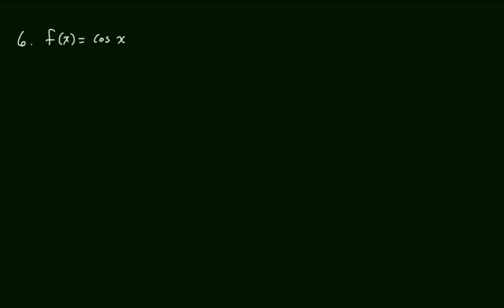Example number six. I hope you recognize this example because it is the same one we did in part one with E1. The difference is we are going to analyze the error using E2. Let's start by remembering what the cosine of x equals: 1 minus x² over 2! plus x⁴ over 4! minus x⁶ over 6!, and so on.